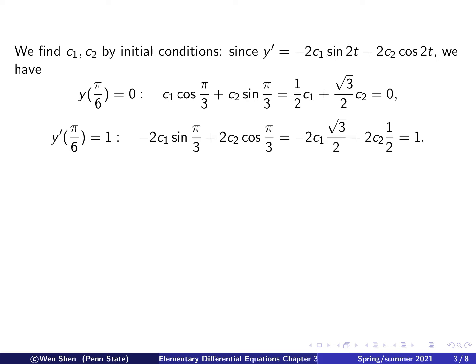Let's fit in the initial conditions. Since one involves y prime, let's work that out first: the derivative is −2c1·sin(2t) + 2c2·cos(2t). Setting t = π/6 in y: cos(π/3) = 1/2 and sin(π/3) = √3/2, giving us (1/2)c1 + (√3/2)c2 = 0 as the first equation.